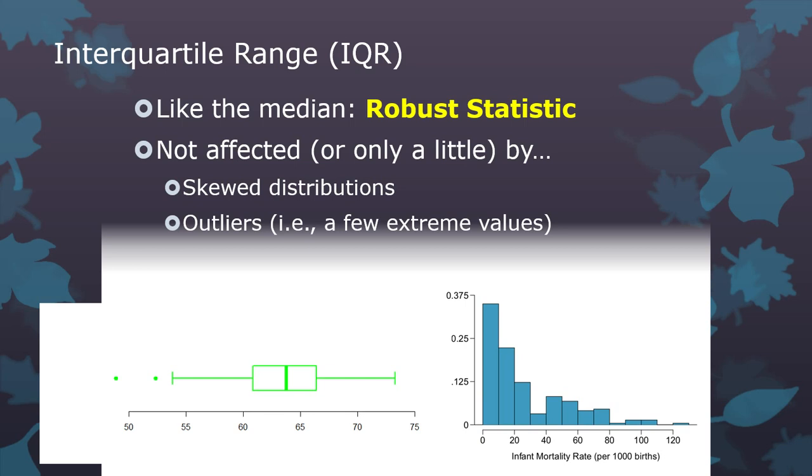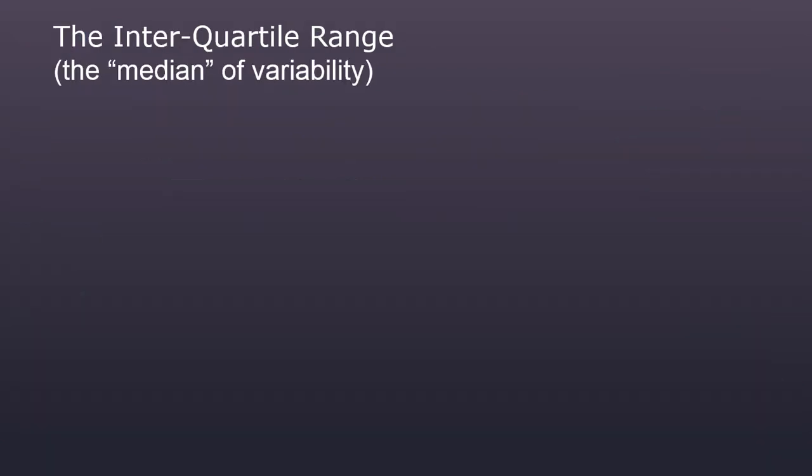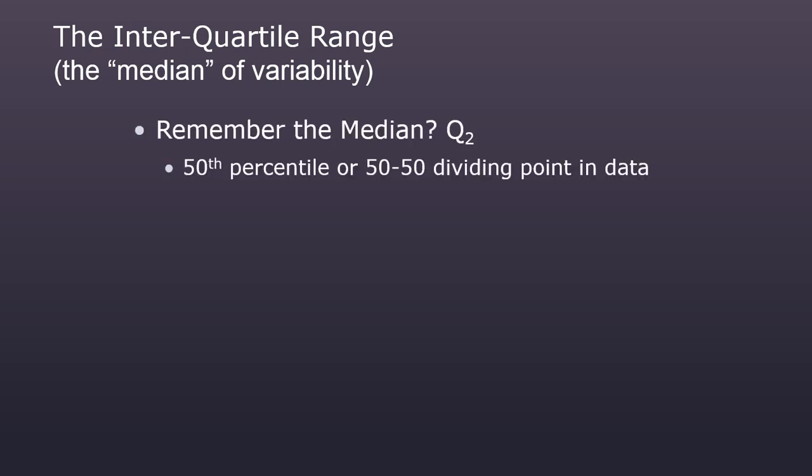So the IQR is a good choice when you have any problems in your data, just like the median. Same problems with your data lead you to the IQR instead of the mean. So do you remember the median is Q2. It's the 50th percentile. It's the 50-50 dividing point in the data.